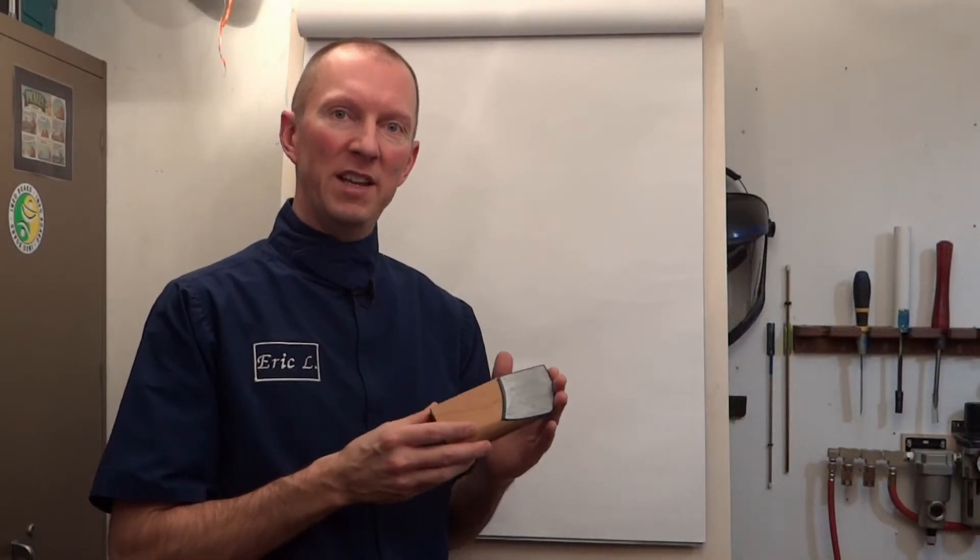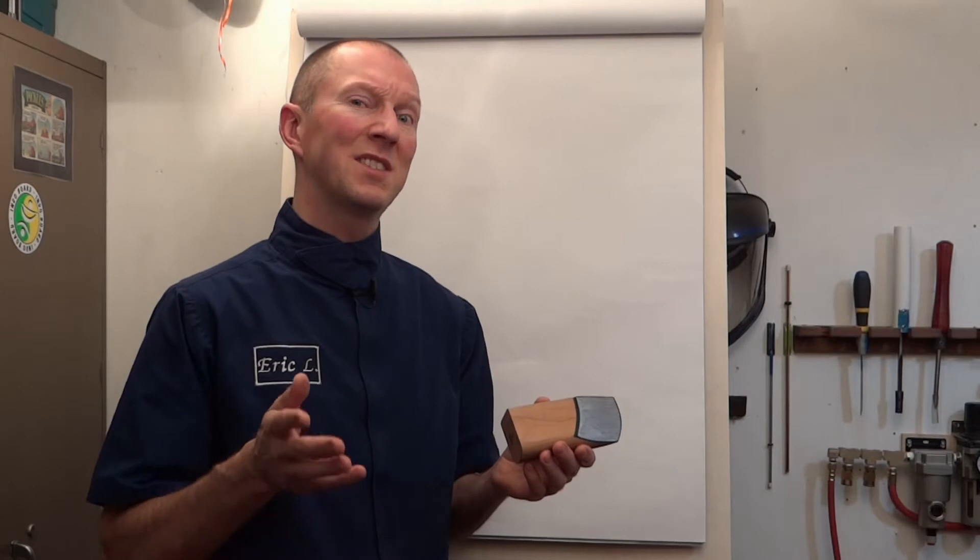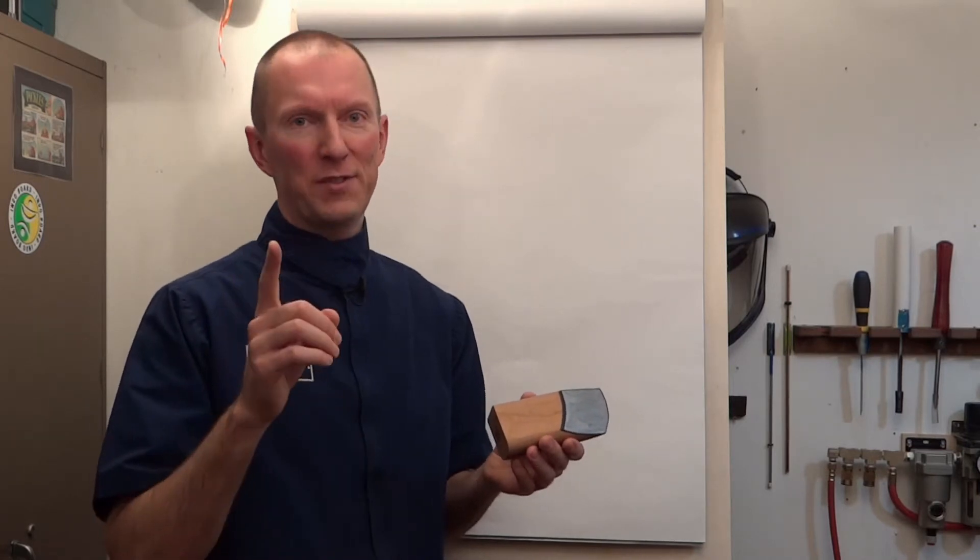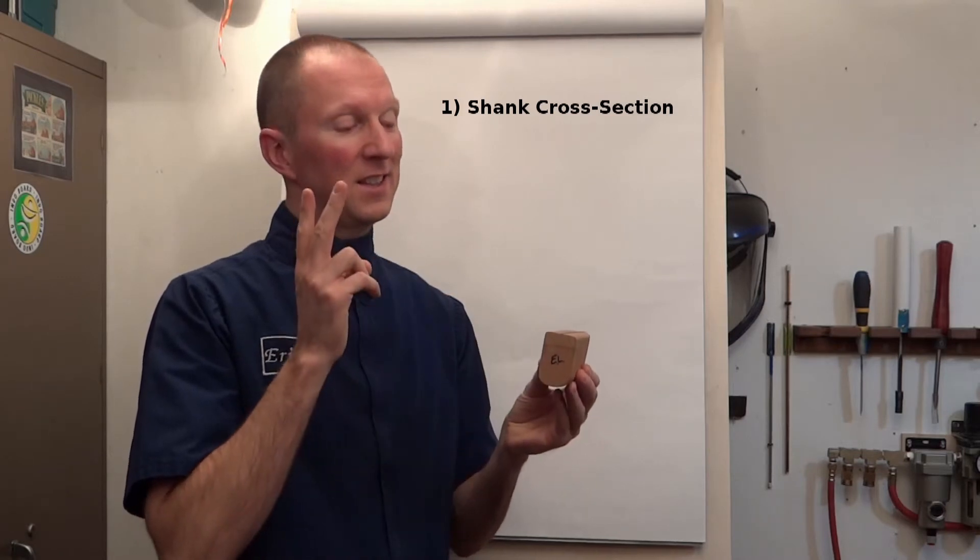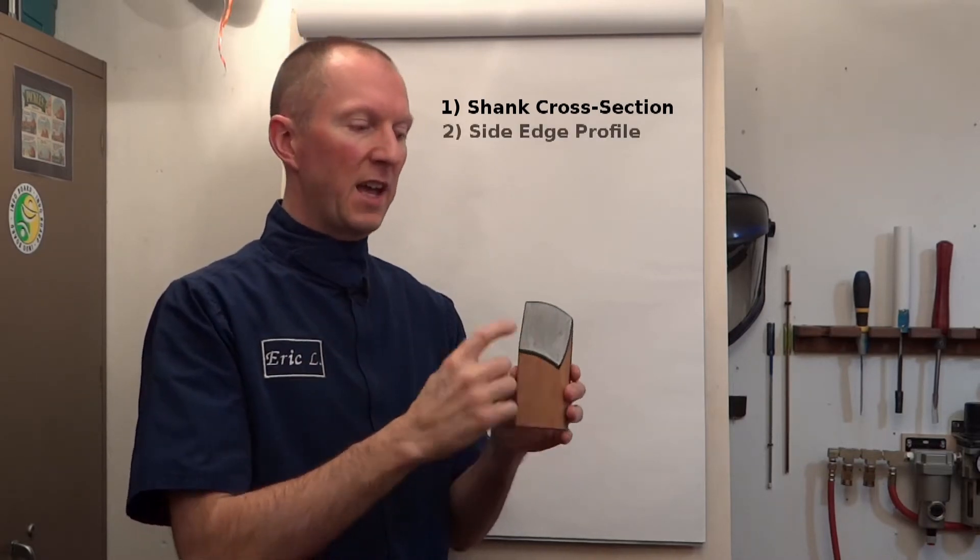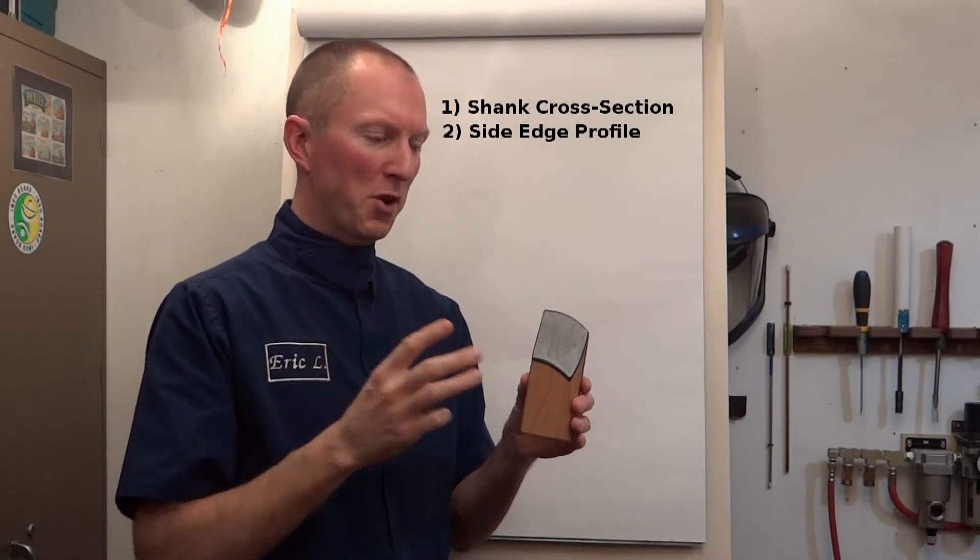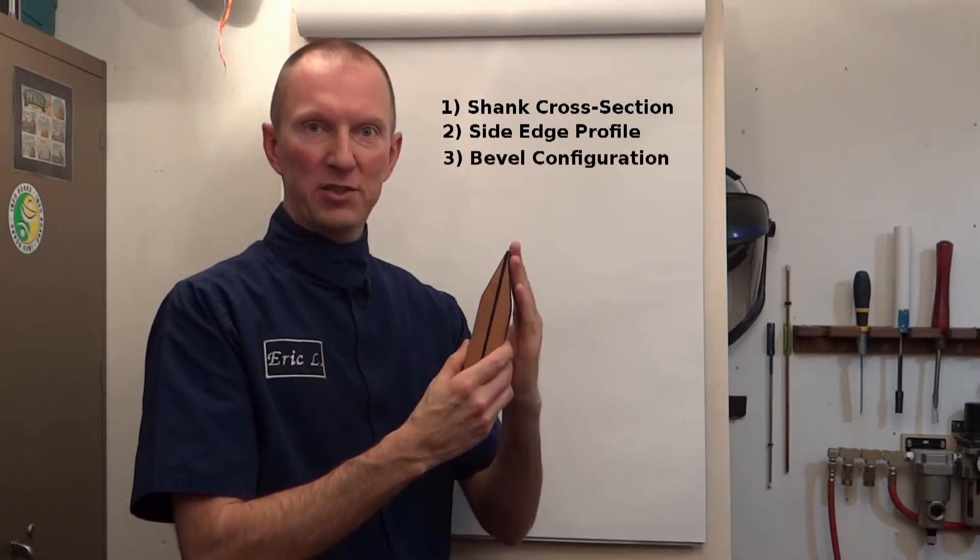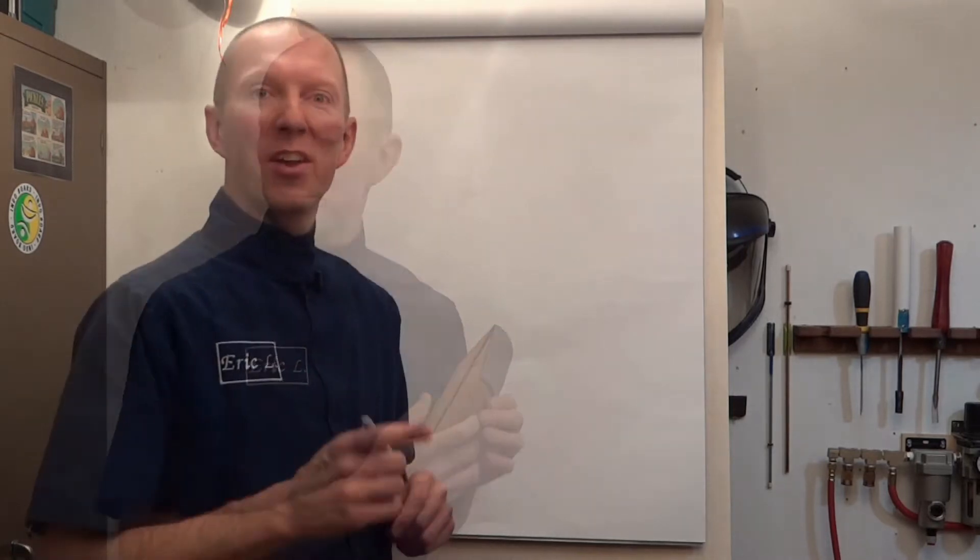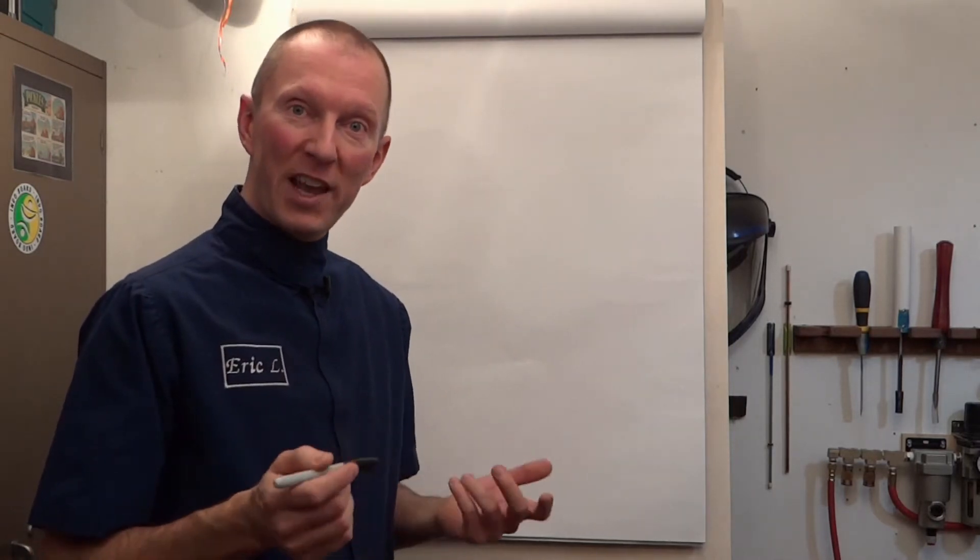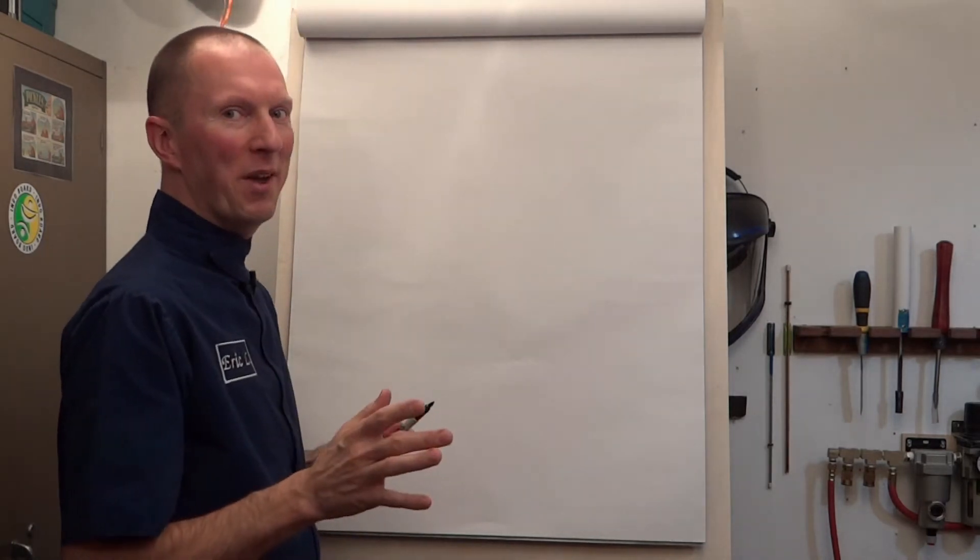We're going to use this model of a radius edge skew to take a look at the three variables that make up the characteristics of any skew. First variable: cross-section of the shank. Second variable: edge profile as seen from the side. Third variable: bevel configuration that makes up the shape of the bevel. Let's take a look.